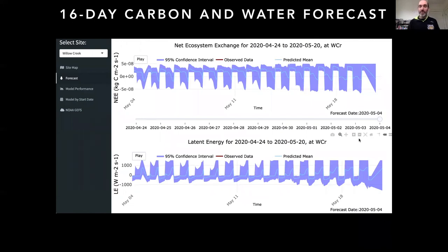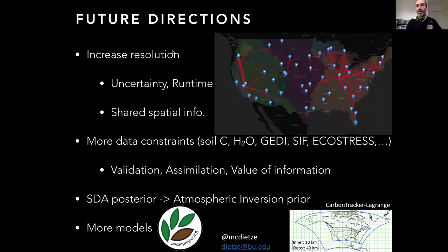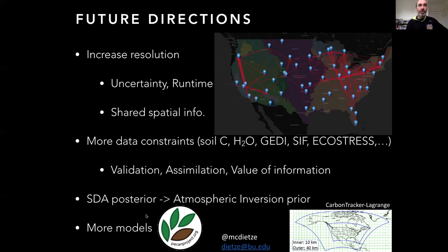Under the hood, the same system we're using for this retrospective historical reanalysis at an annual time scale is also being used to run real-time carbon forecasts at weather time scales. For future directions, we're continuing to increase spatial resolution and understand the spatial covariance in these data products. We also want to increase data constraints — getting a soil carbon constraint in is high on our list, since right now that's completely latent. The posteriors from this data assimilation product are also being fed into an atmospheric inversion as a prior. Finally, we want to expand this to more models, since this is done in the PEcAn framework, which already supports 20 different models.